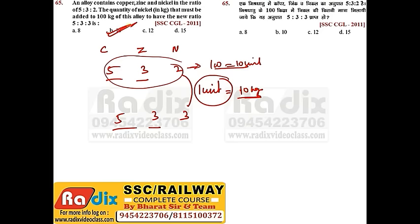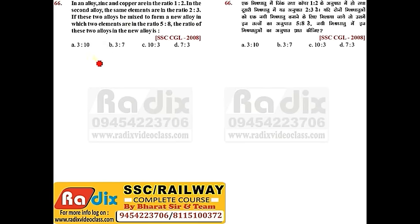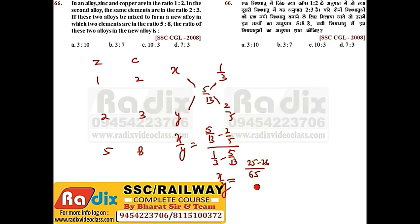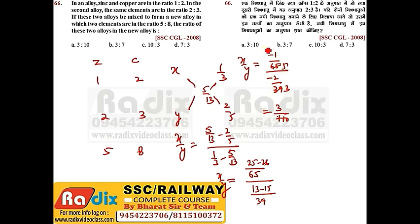Question 66. In an alloy, Zinc and Copper are in the ratio 1:2. In a second alloy, the same elements are in the ratio 2:3. If these two alloys are mixed to form a new alloy in which Zinc to Copper is 5:8, find the ratio of the two alloys. Using allegation with zinc fractions: 1/3, 2/5, and 5/13. Solving: x/y = (2/5 − 5/13) / (5/13 − 1/3) = (1/65) / (2/39), giving the ratio. Answer is option A.